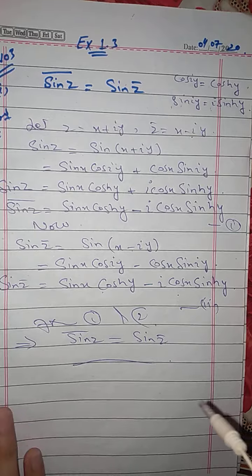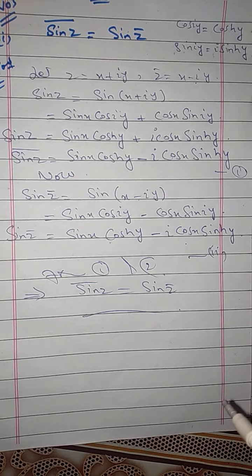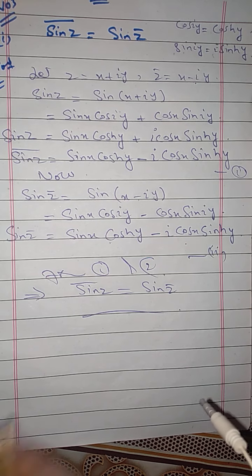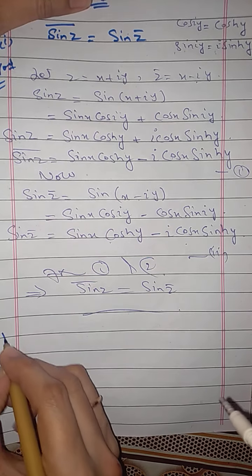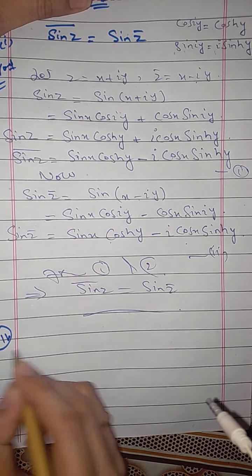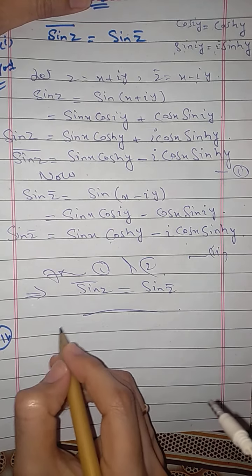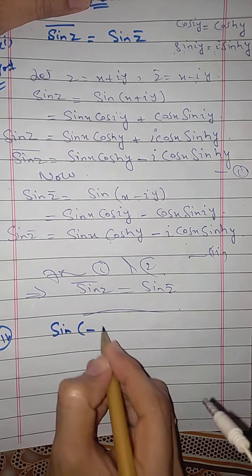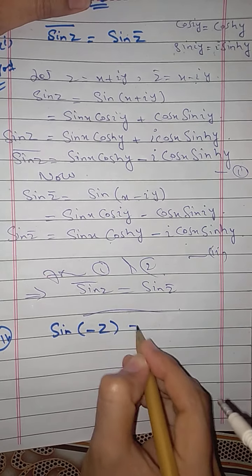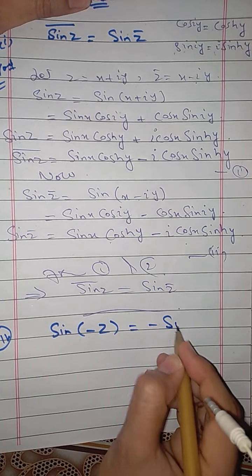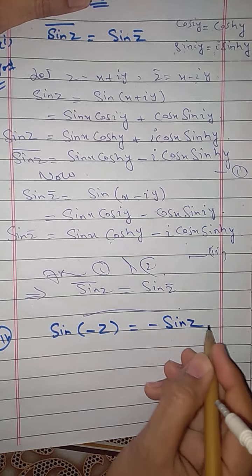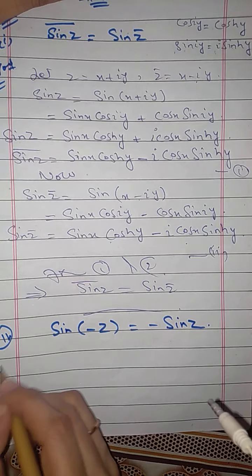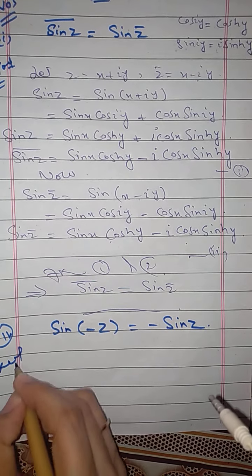From equations one and two, the first part is proved. Now we have to prove the fourth part of the same question: sin(−z) = −sin(z). How will we prove this?